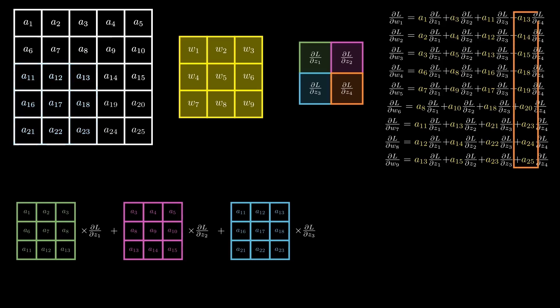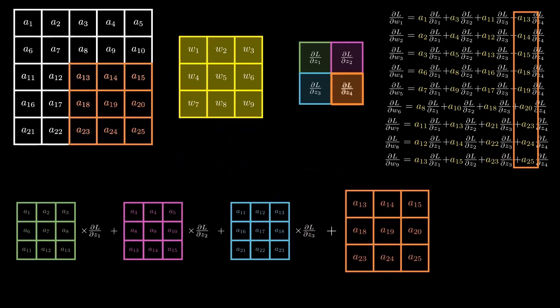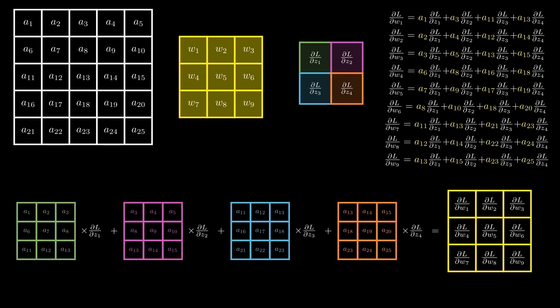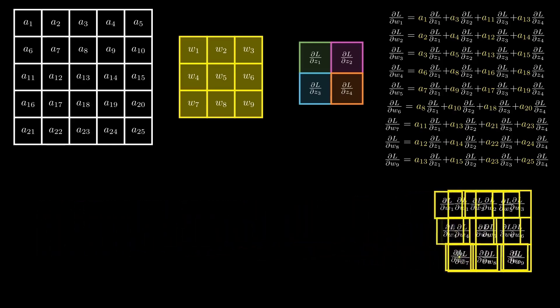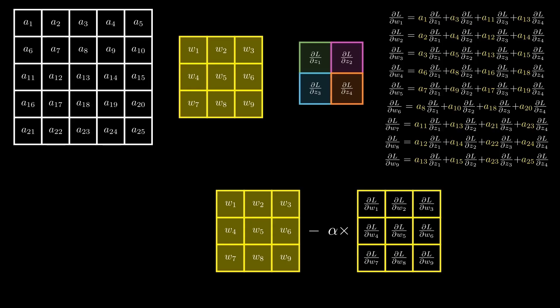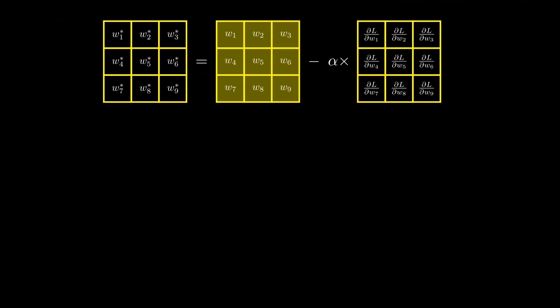Finally, we do the exact same thing for the a values in front of the partial derivatives with respect to z4. This maps out to be the fourth and final step in the convolution. We copy these values and multiply them with the partial derivative of the loss with respect to z4. Multiplying and adding the matrices together gives us the matrix containing the partial derivative of the loss with respect to the weights. Multiplying this matrix with the learning rate alpha and subtracting it from the kernel gives us the updated weights — exactly as the formula we looked at earlier. Beautiful, isn't it?